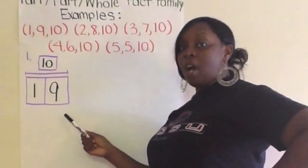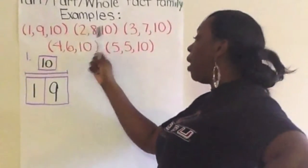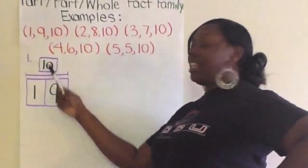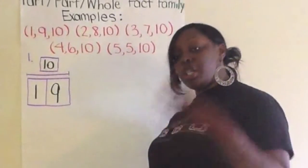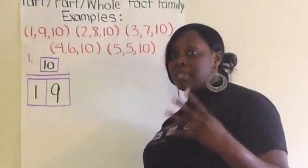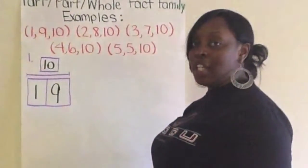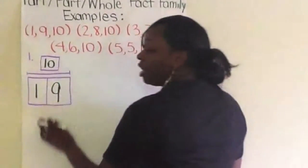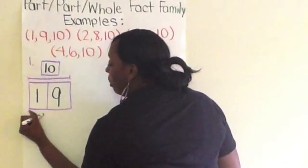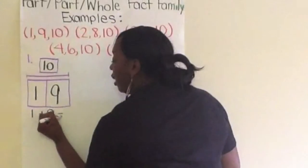Underneath each part, part, whole map, because you will show one part, part, whole map for each number combination, you're going to show me the four related problems that go with that number combination. So, for example, the first problem will be 1 plus 9 equals 10.